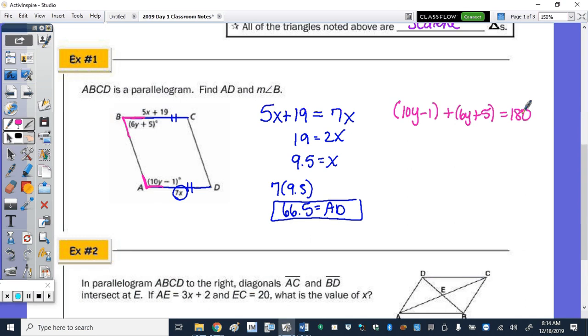Combining like terms, and I'm actually going to subtract the 4 over to the other side. We get 16y equals 176, divide by 16, and y is 11. So the measure of angle B is going to be 6 times 11 plus 5, or 71 degrees.